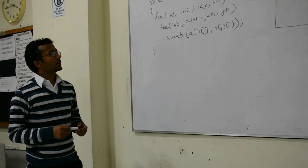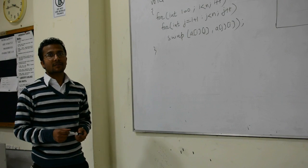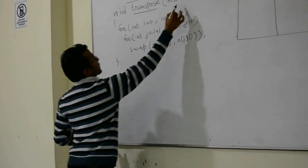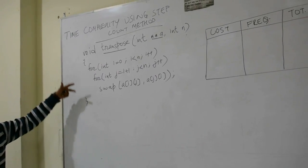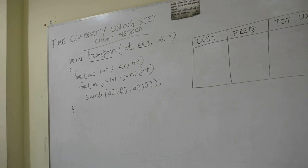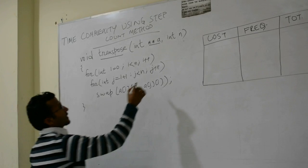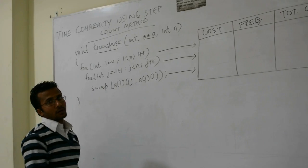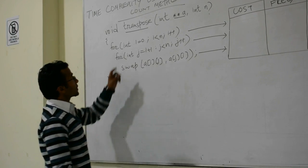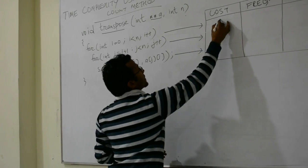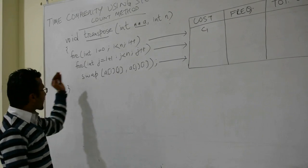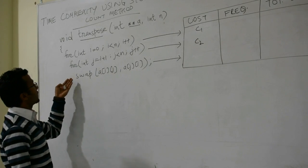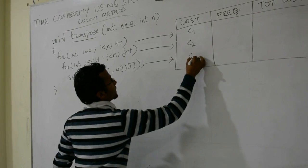Let us take one more example for finding the time complexity using the step count method. This example finds the transpose of a given matrix A. These are the steps required for this algorithm. For each and every step, we are going to find out the cost, frequency, and total cost. Let us assume that the cost for running the first for loop is C1, cost for running the second for loop is C2, and the cost for running the third statement — calling the swap function — is C3.